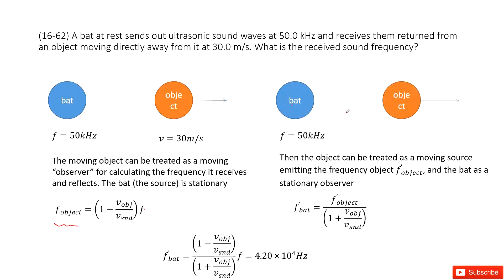Now we can see the second time when this object received the frequency f_object_plus, and then it will return the sound wave to the bat. What is the frequency the bat received? So in this object we can see, because the source comes from the object, it will return.